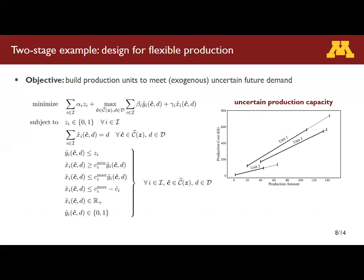We apply the proposed methodology to two examples. The first one is a two-stage problem which optimizes the design of a flexible production system. The objective is to decide which production units to build in order to meet uncertain future demands. Y_i is our first-stage binary decision indicating whether unit i is built or not. Y-tilde-i and X-tilde-i are our second-stage decisions: Y-tilde-i denotes whether to operate unit i, and X-tilde-i is the corresponding production amount. We need to satisfy the demand, enforced by demand constraints, and there are also capacity constraints. In addition to demand, we also have an uncertain production capacity. What is shown here is the production cost curve of three different units along with the range of available production amounts.